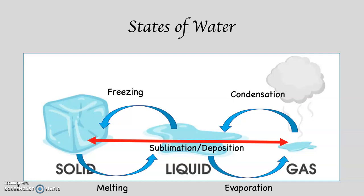Water can also go from being a solid to a gas, or a gas to a solid, bypassing the liquid state. When it does that, we call this either sublimation or deposition, depending on which direction the water is going. If water goes from a gas to a solid — for example, frost — we call this deposition, because something is being deposited. When it goes from a solid to a gas, we call this sublimation. Although within the scientific community, many people use the term sublimation to mean both directions, and I do that as well.